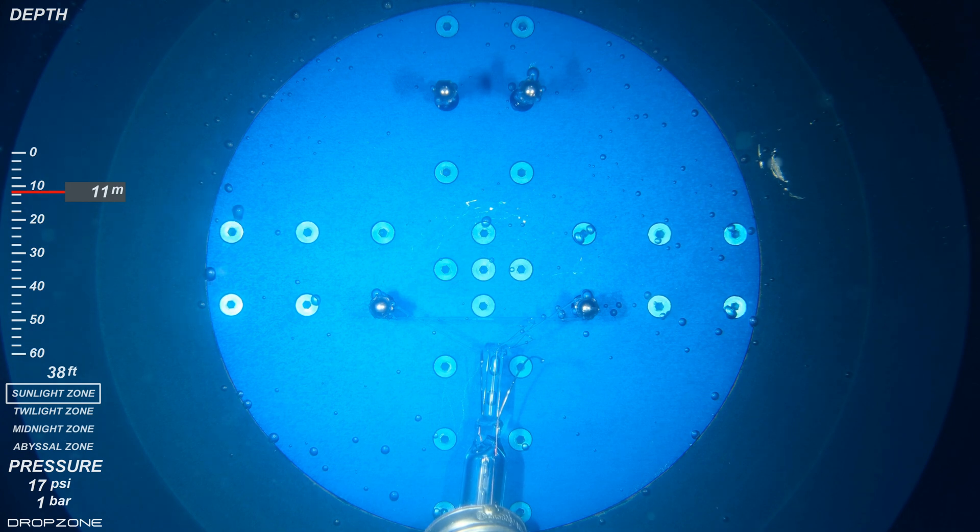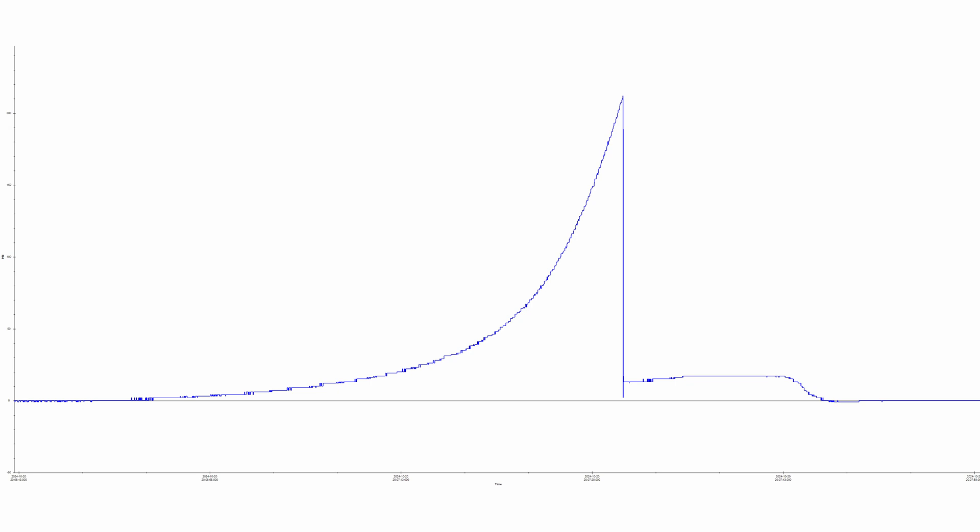That was freaky. I hope it didn't induce any panic attacks for anyone watching. The bulb imploded at 146 meters in the sunlight zone, which is no surprise considering the glass is only 0.7mm thick. Let's replay it again in slow motion.